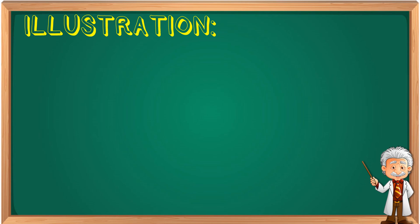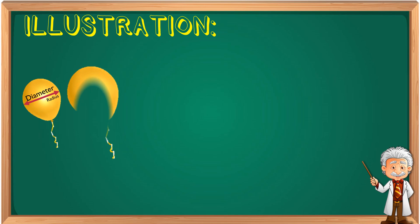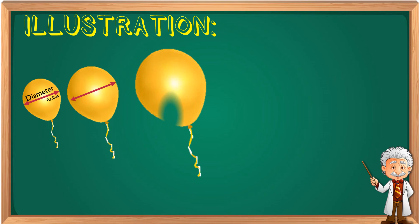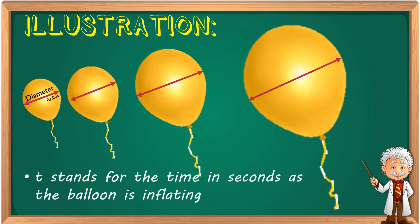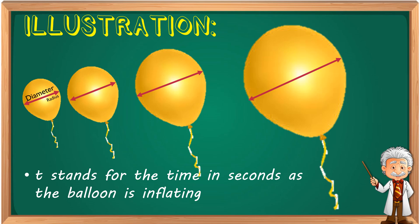Let's have the illustration of the problem. Suppose this is the balloon being inflated — 'inflate' means air is being put inside so it expands. The distance from one point to another point of the spherical balloon is called the diameter, and half of the diameter is called the radius. As more air is added, the diameter grows and the radius grows as well. Here, t stands for the time in seconds as the balloon is inflating.